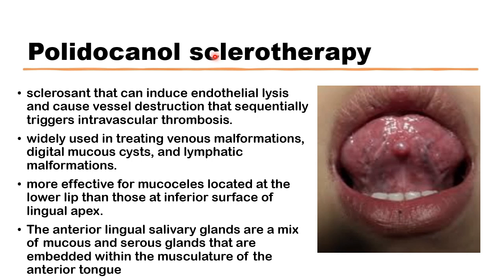Sclerotherapy with polidocanol is promising. This agent can induce endothelial lysis and destruction of blood vessels with subsequent triggering of intravascular thrombosis. It is widely used in the treatment of venous malformations, lymphatic malformations, and even mucous cysts in fingers. It is much more effective on mucoceles affecting the lips than those originating from the ventral surface of the tongue, as those glands are embedded deeper into the muscle layer, making precise injection targeting less straightforward.